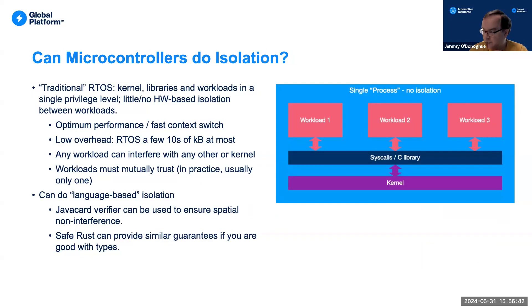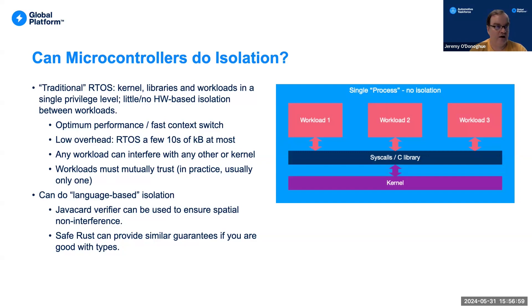We've talked about application class processors so far. What about microcontrollers? If we look at the traditional view of an RTOS, everything runs in a single privileged level. You have a kernel providing abstractions like threads, system memory pools, and some sort of library, with almost no hardware-based isolation. If we put workloads into such a system, the model says everything trusts everything else — any workload can interfere with any other workload or the kernel. Why might we do this? It's fast, with pretty optimal performance.